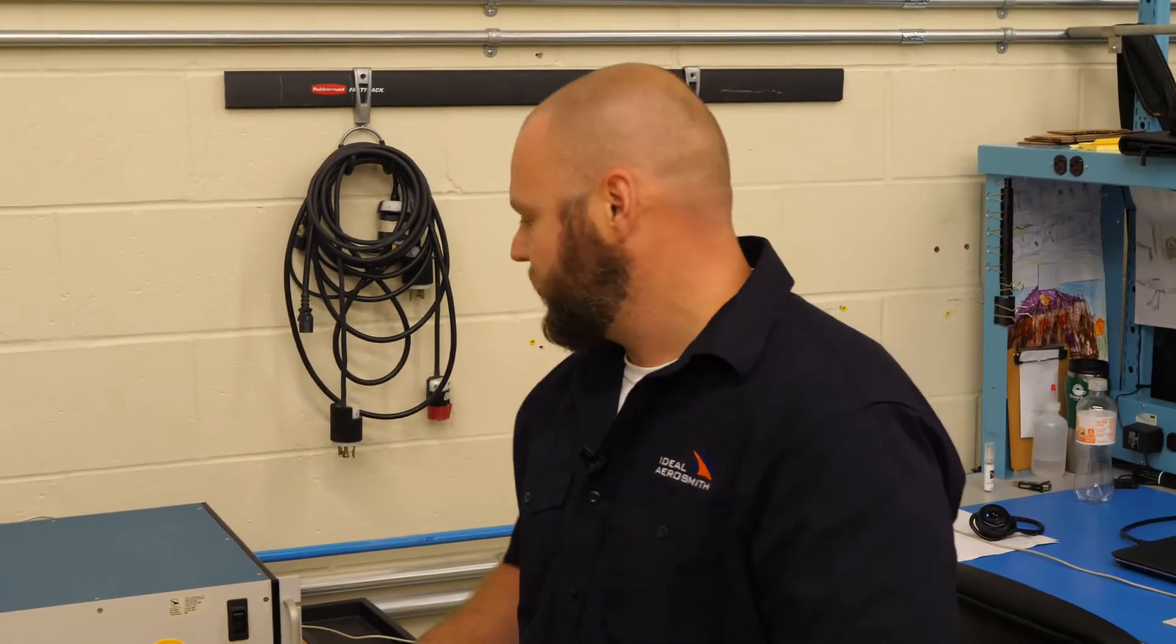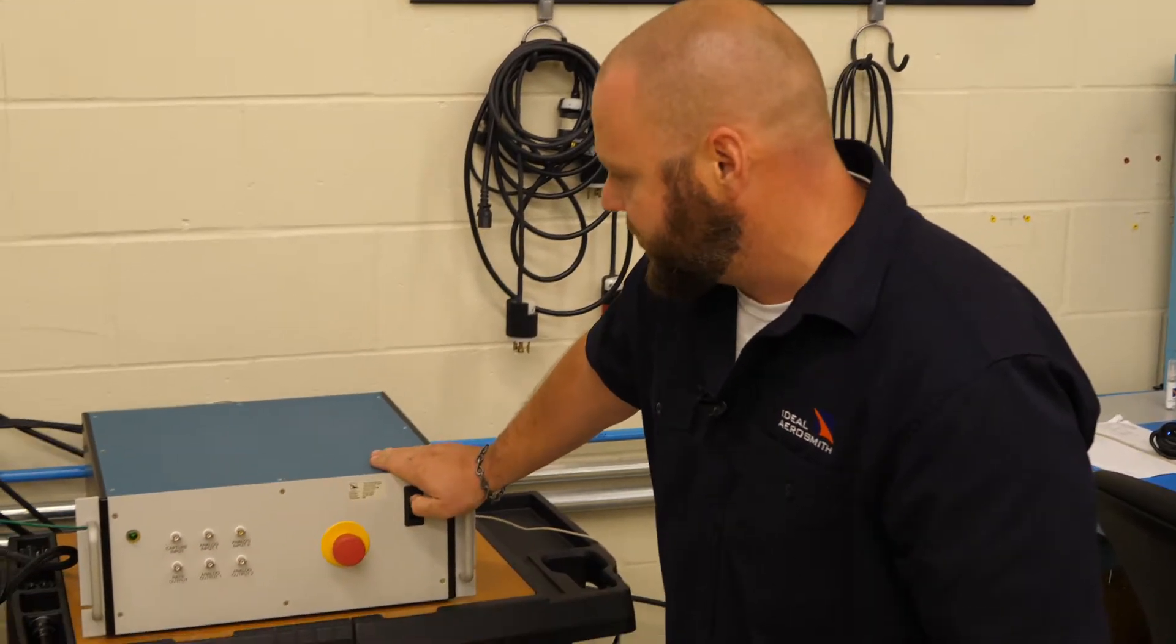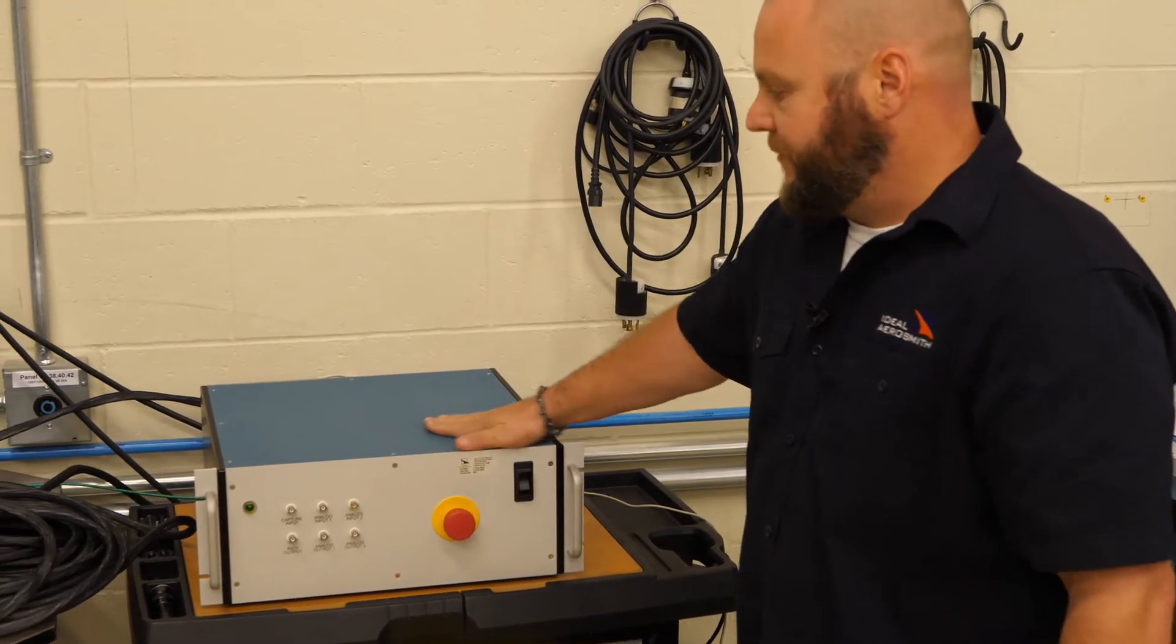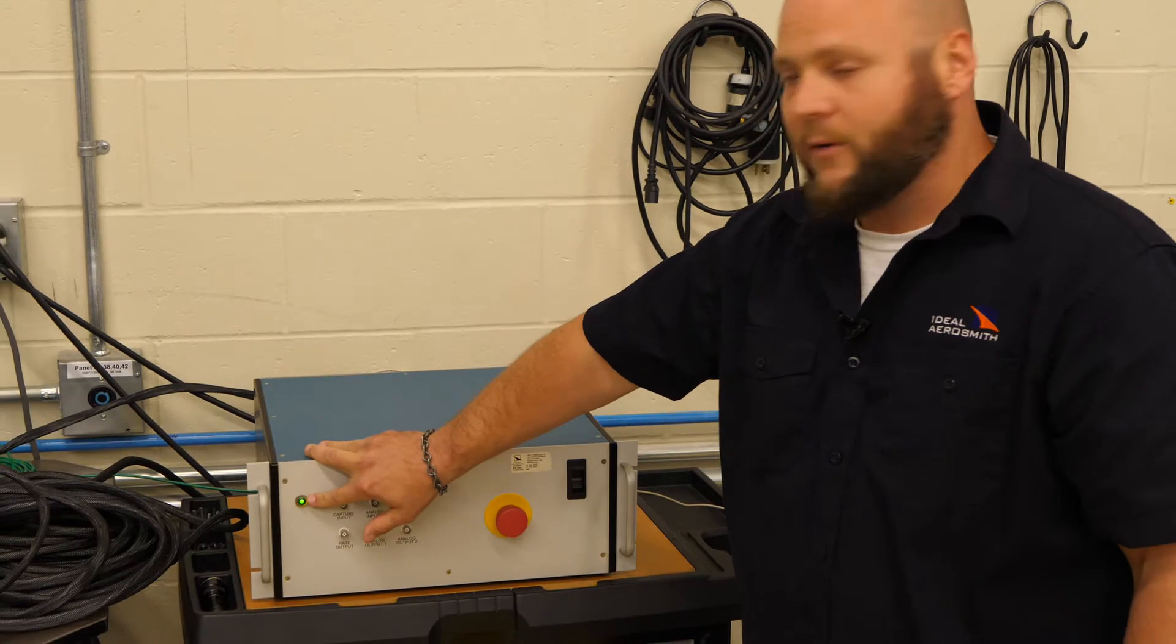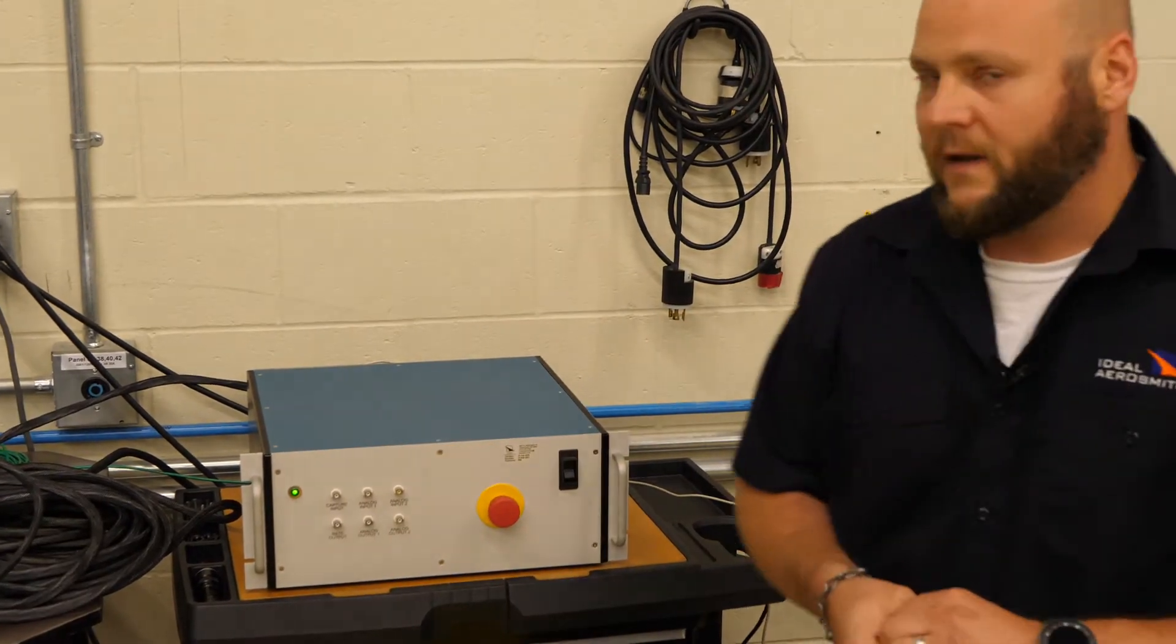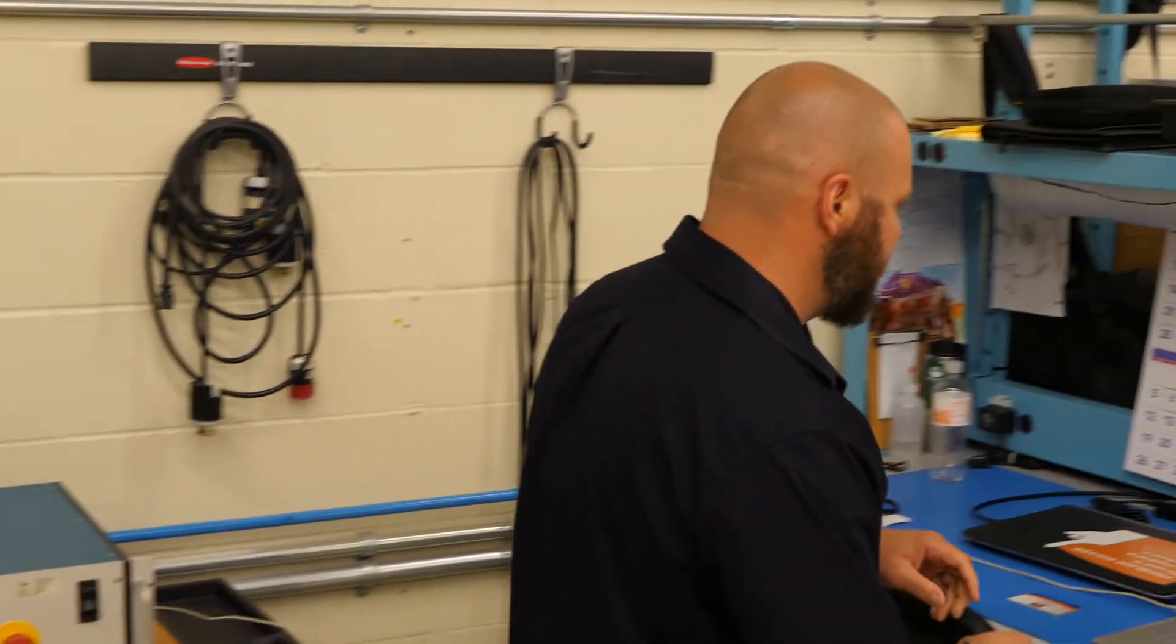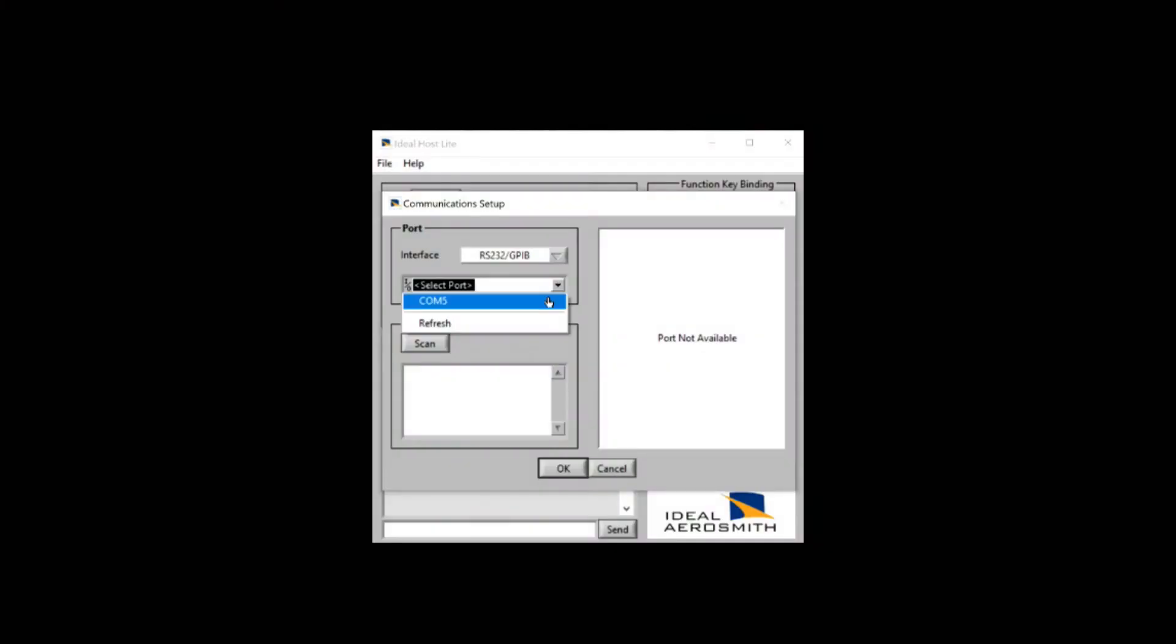The next step will be to power on the 1291BL motion controller using the large black switch. You'll hear the fans kick on and see the green power LED illuminate. Then we'll go over to the laptop that we're using and fire up Ideal Host Lite.